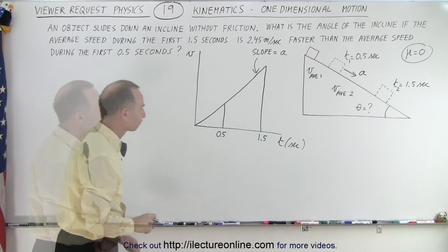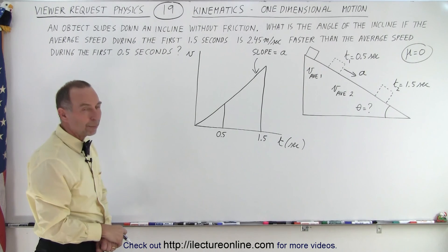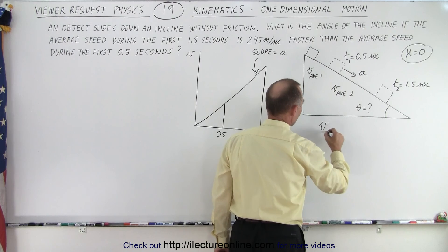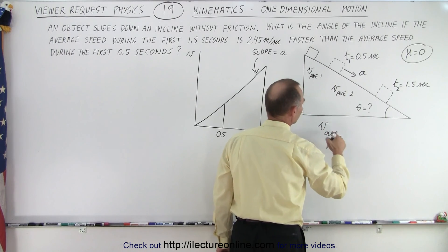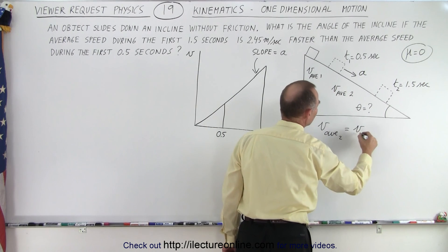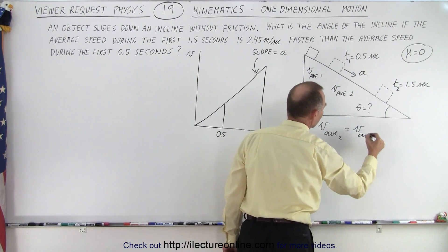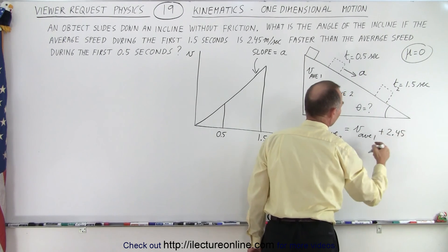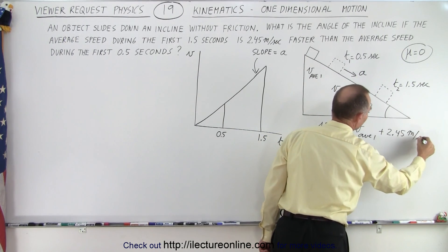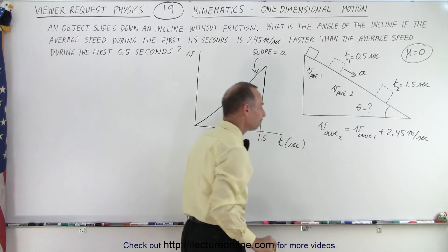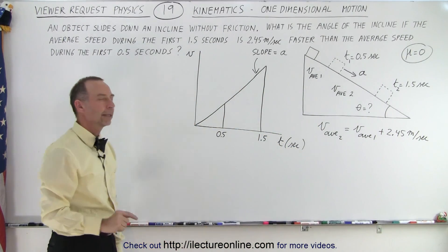Now, we can come up with a relationship between V average 2 and V average 1. We can say that V average 2, which is the average velocity of the first 1.5 seconds, is equal to V average 1 plus 2.45 meters per second. So we know that this velocity is greater than this velocity by this much.